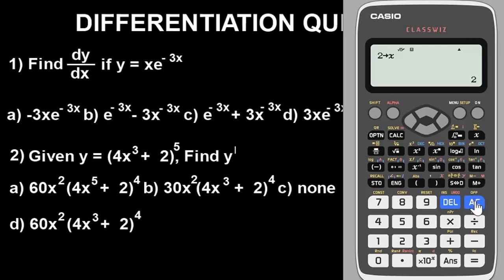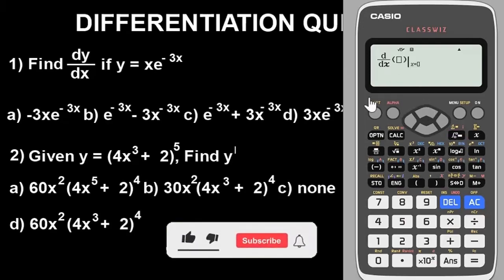I've stored 2 as x in this calculator. So let's go ahead and solve this question. What we're going to do here is to differentiate the equation. Let's differentiate the function. To bring out the derivative symbol on this calculator, you press Shift, then the Integral button. The d/dx button will come out.